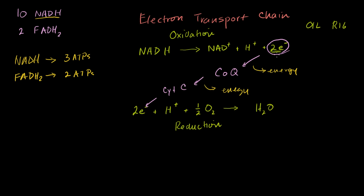Energy is released when electrons go from a higher state to a lower state. When these electrons were in NADH, they were in a higher state than when they bond to coenzyme Q — so they release energy. Then they go to cytochrome C — you release energy. That energy is used to pump protons across the cristae, across the inner membrane of the mitochondria. I know this all sounds very complicated, and this is the cutting edge, so maybe it should sound a little complicated.